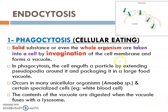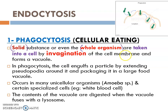Now we look in detail at endocytosis, especially the first type, which is phagocytosis. Most of you already know this term, especially from learning about the immune system. For phagocytosis, we can say in general terms it is cellular eating. The substances or particles involved are solids, or it can even take in whole organisms — for example, taking in bacteria.